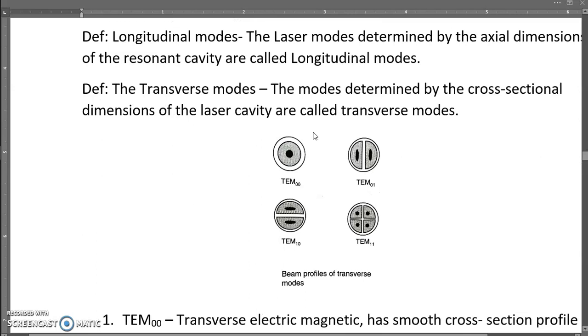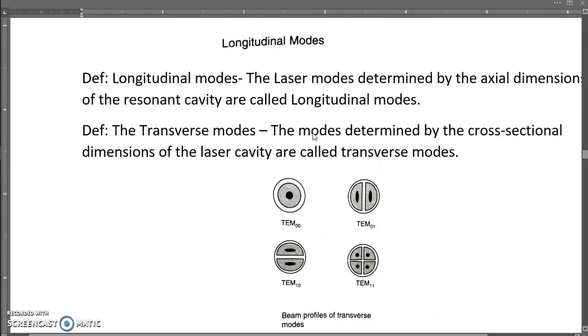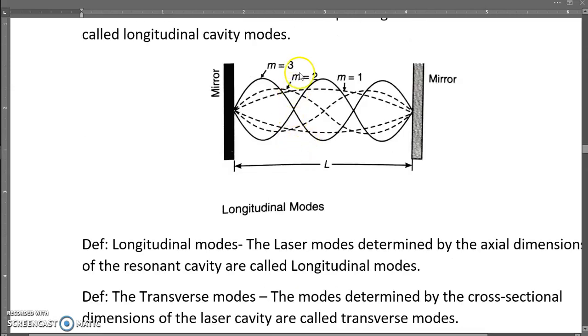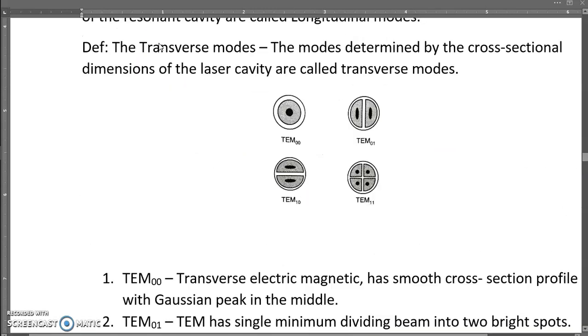Now let us see the transverse modes. The modes are determined by the cross-sectional dimensions of the laser cavity, not the axial direction - the axial direction is the longitudinal cavity mode.